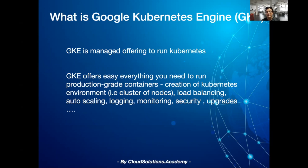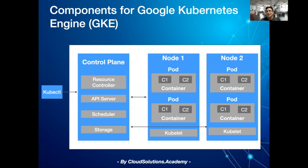Later in our production lab we'll look at how to set up a GKE cluster. Now let's look at the components of Google Kubernetes Engine. In GKE you start off with creating a Kubernetes cluster. A cluster in general is a collection of machines or nodes. A Kubernetes cluster consists of at least one control plane and multiple worker machines called nodes. The control plane and node machines run the Kubernetes cluster orchestration system.